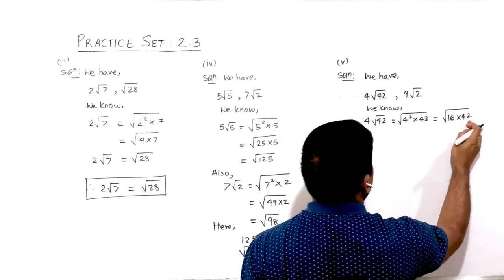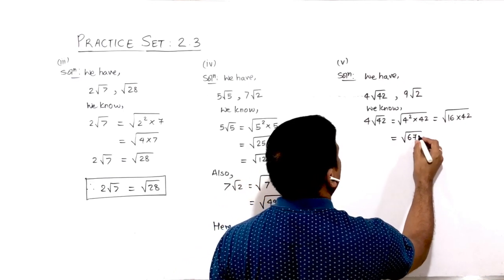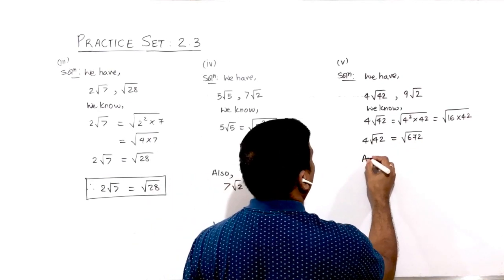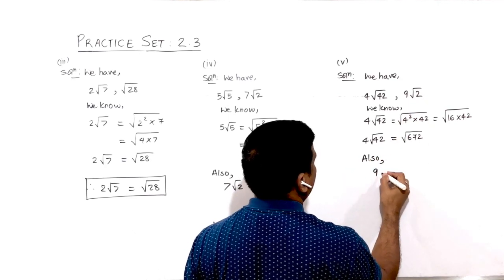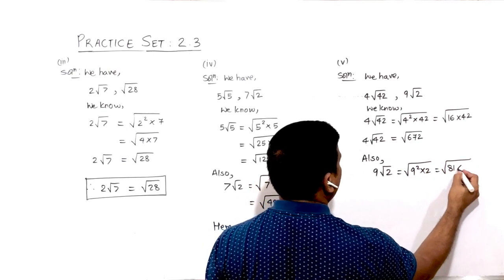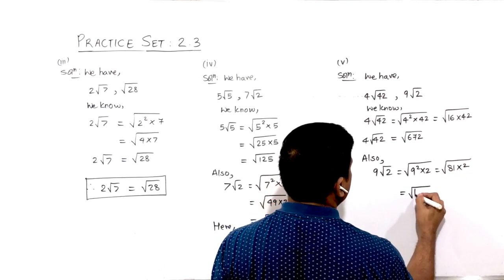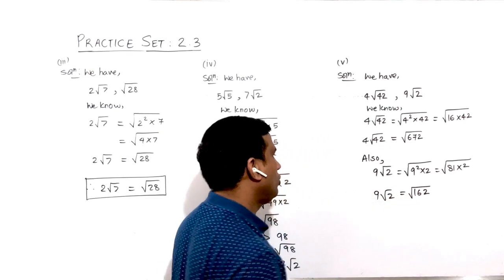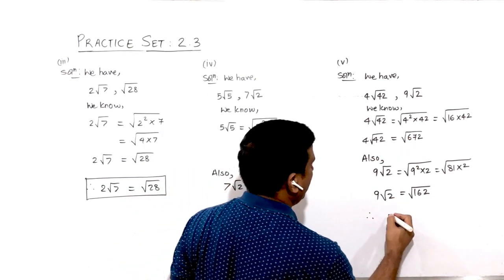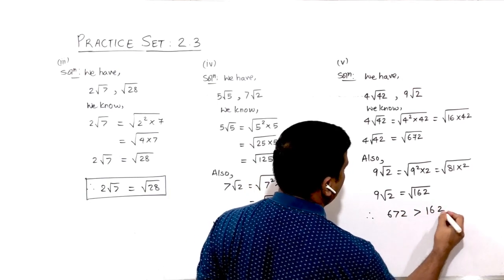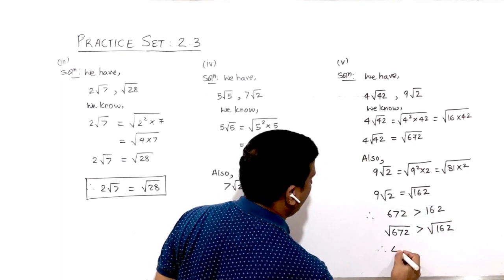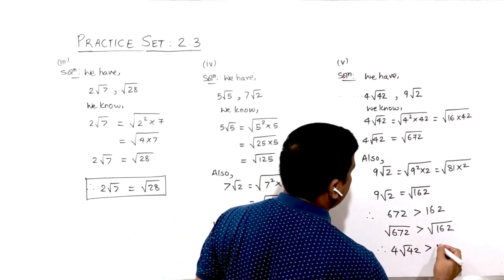The value for 4√42 is √672. Also simplifying the second term: 9√2 = √(9² × 2) = √(81 × 2) = √162. Now comparing both terms: 672 is greater than 162, so √672 is greater than √162, therefore 4√42 is greater than 9√2.